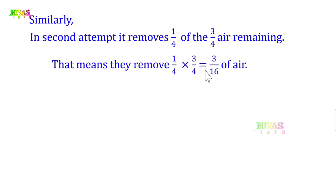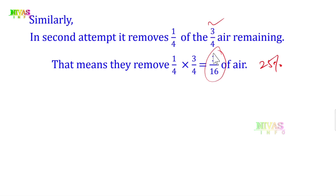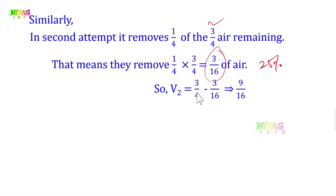After the first removal: 3/4 of V remains. After the second removal, 1/4 of 3/4 V is removed, which is 3/16 V. So the remaining air after the second pump is V2 = 3/4 V − 3/16 V. The third term is 9/16 V.